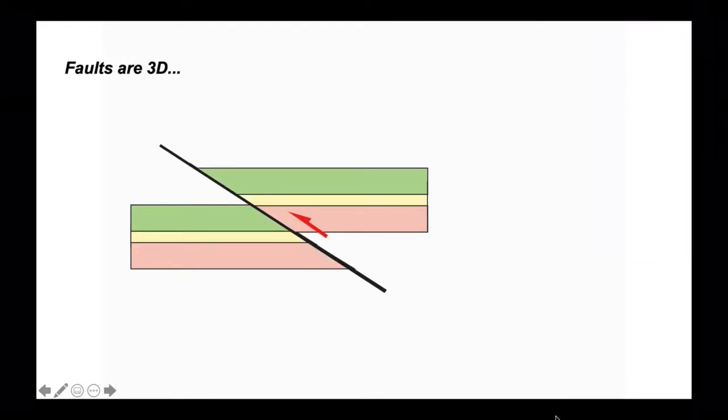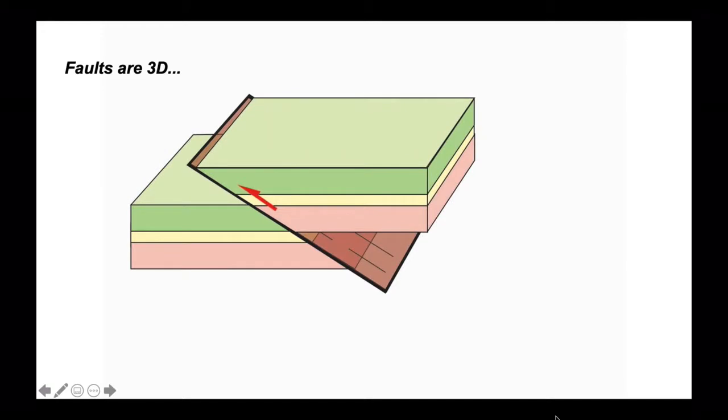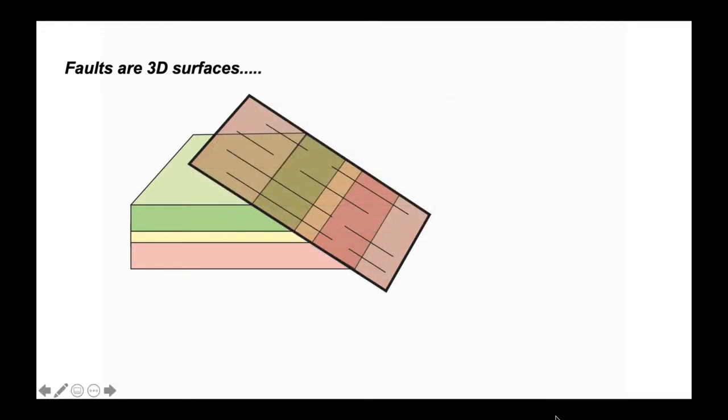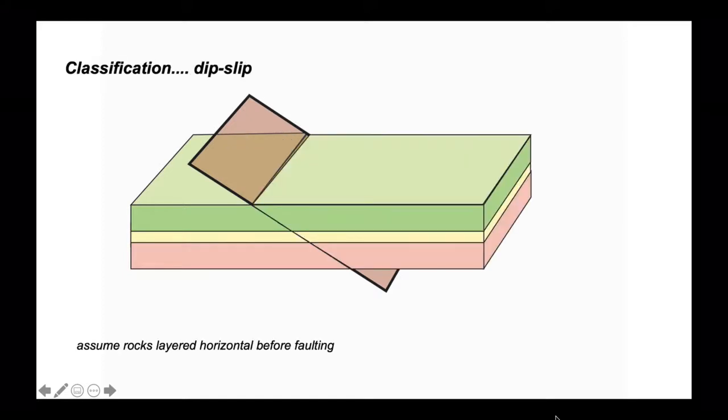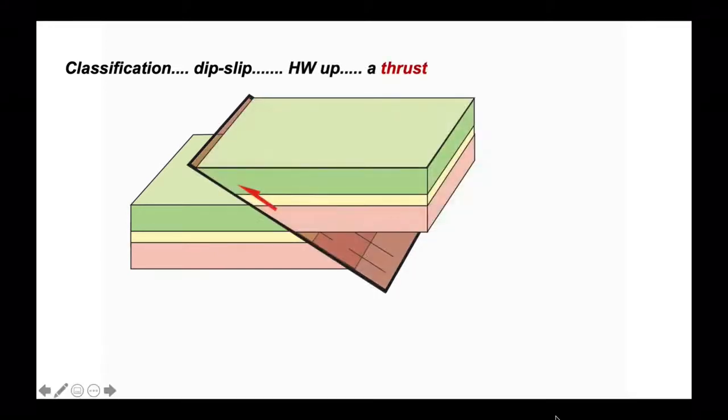Now let's think about faults in three dimensions. We've been working in 2D so far. Let's move to three dimensions. Here's our fault and we strip away the hanging wall and we can see that the fault is a surface. It's a planar surface in 3D space. Let's assume that the rocks were laid horizontal before faulting. In this case we've moved the hanging wall up and we call these faults where the hanging walls moved up thrusts.